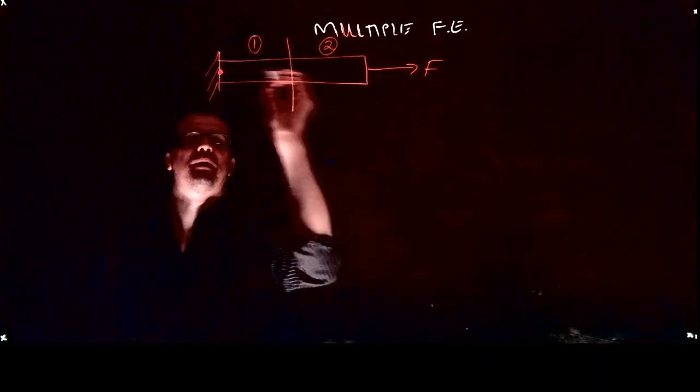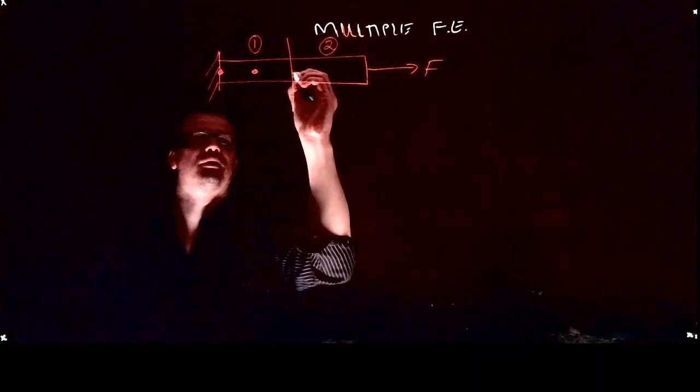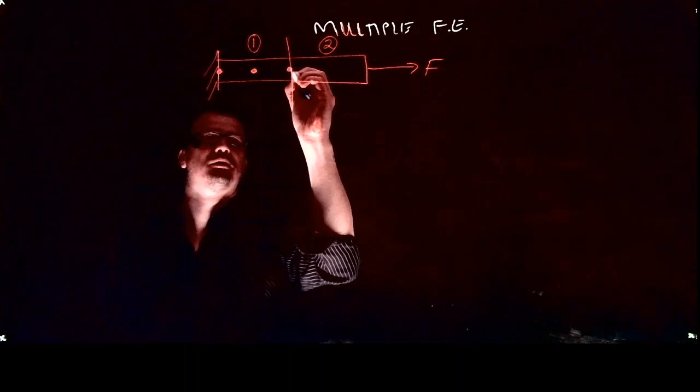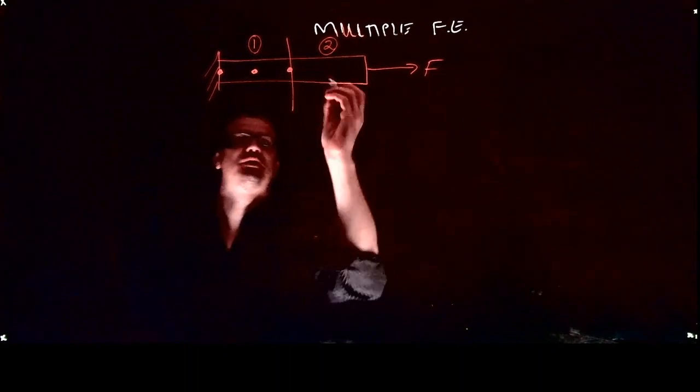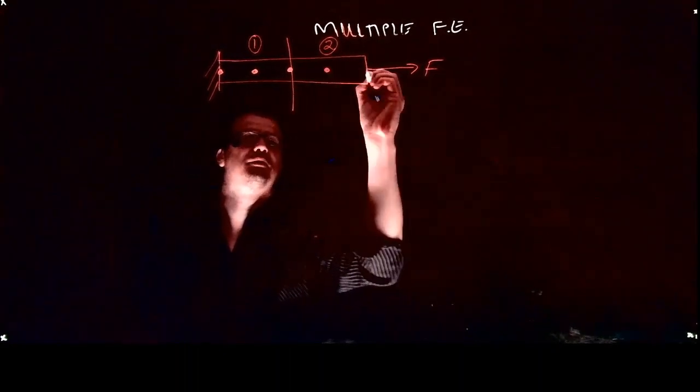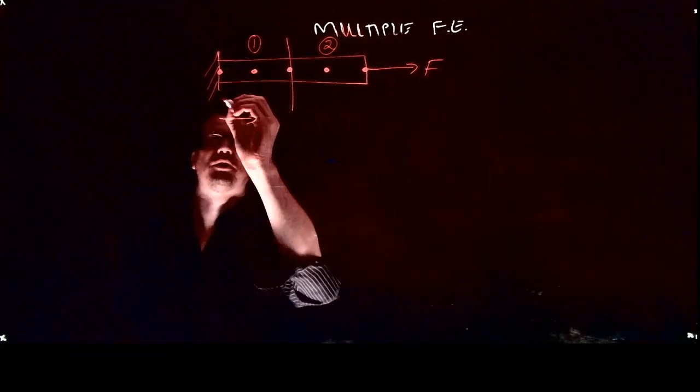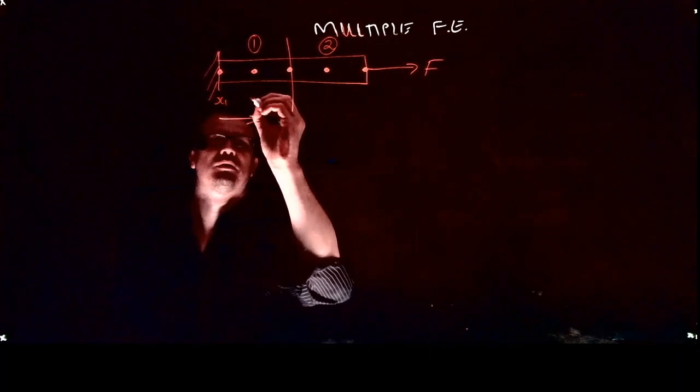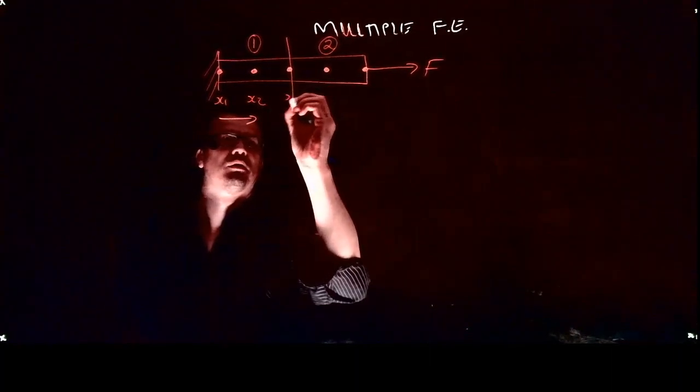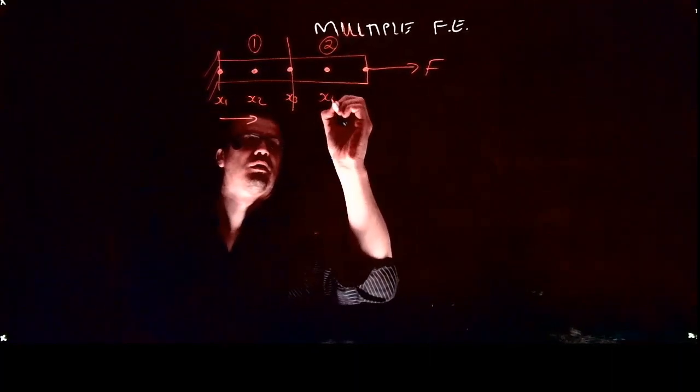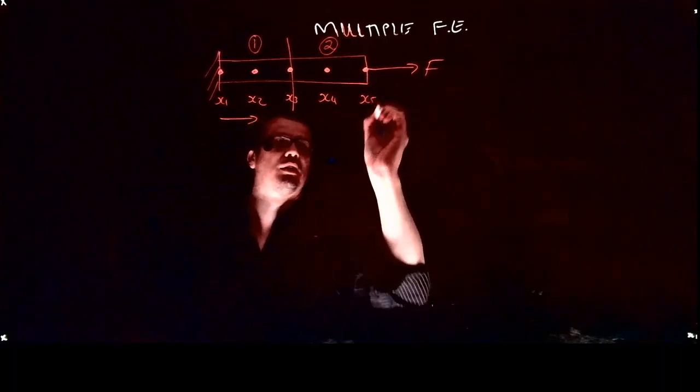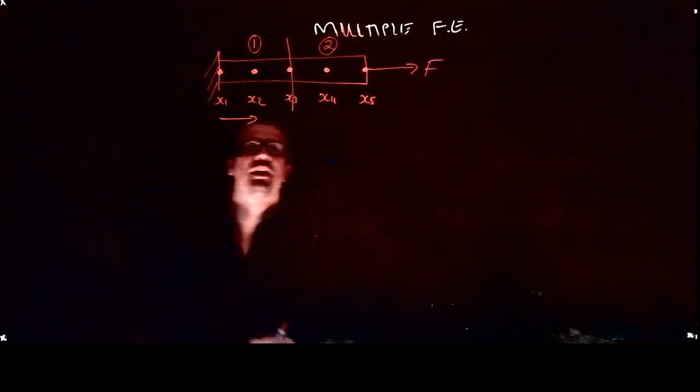There's my mesh for this element and here's my mesh for the second element. Each node has an associated x value. Each one has its own associated x value.